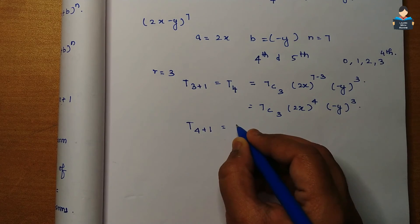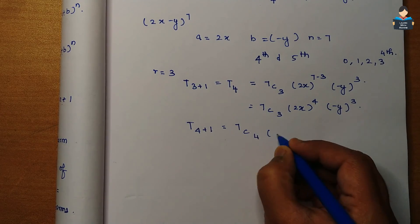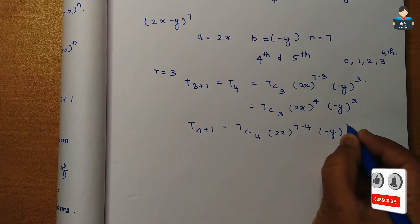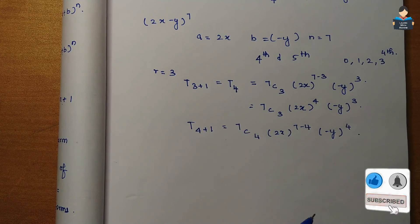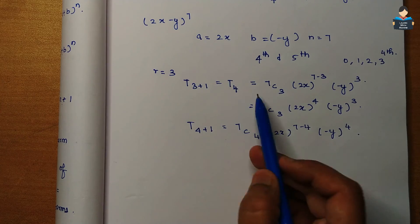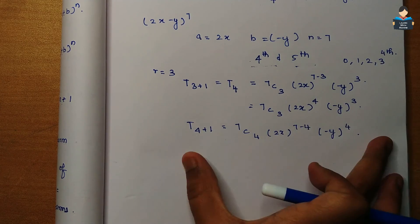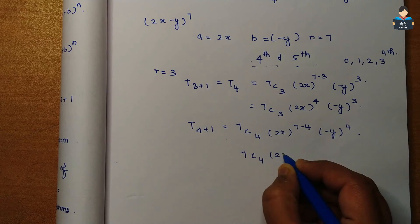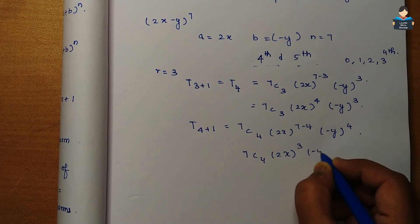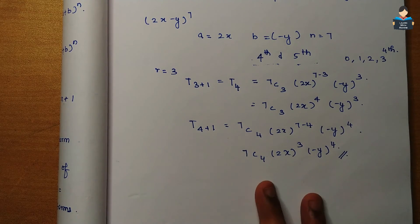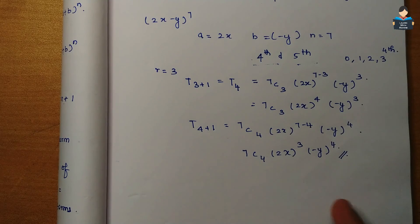For the 5th term, r = 4: T5 = 7C4 * (2x)^(7-4) * (-y)^4 = 7C4 * (2x)^3 * (-y)^4. That completes this video. In the next video we will solve Exercise 8.2. Please share and subscribe — thank you.